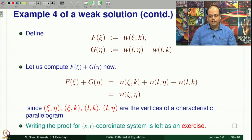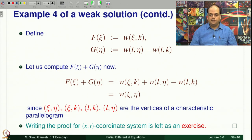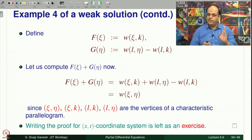Writing the proof in the (x,t) coordinate system is left as an exercise. As a hint: recall in lecture 5.1 the proof of the equivalence was presented in (x,t) coordinates; think of the proof in (xi,eta) coordinates and then translate those ideas back to (x,t). Go back and watch lecture 5.1 carefully, try the proof in characteristic coordinates, and see how the proof was written in (x,t) coordinates — then you should be able to translate the ideas.